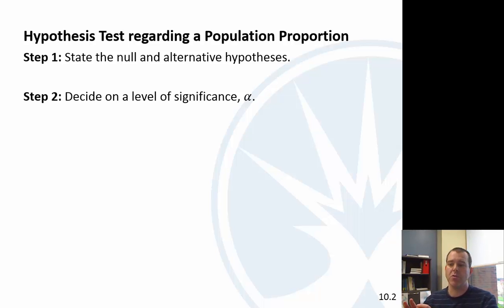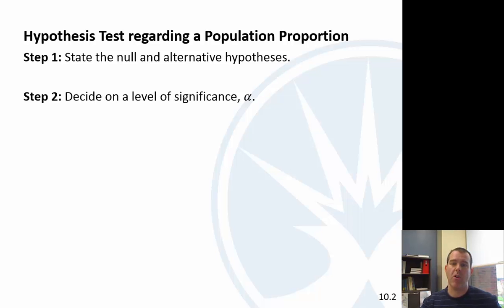If something happens 8% of the time and that could just happen randomly, but the fact that this many people get cancer at that rate tells you: let's not give this drug. So you're okay with that level of significance in that scenario.